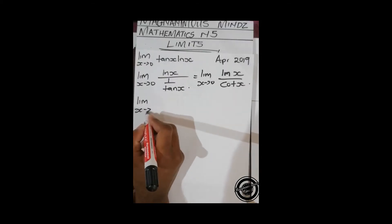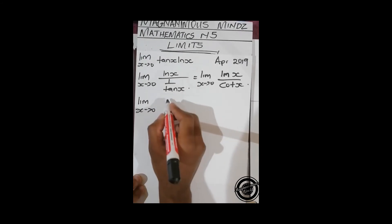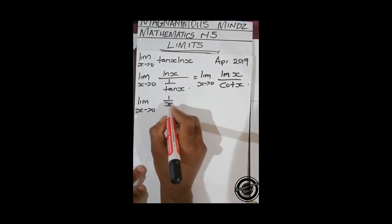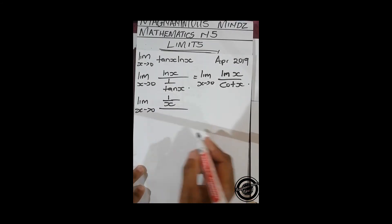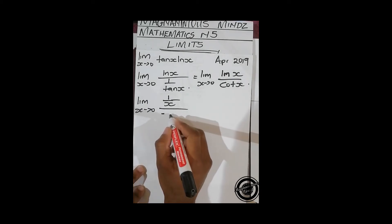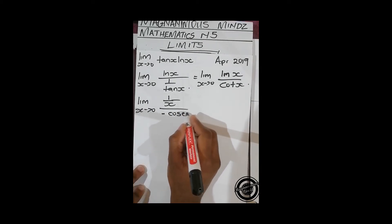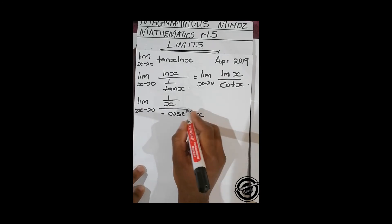So we use L'Hôpital's rule and differentiate. Ln x is 1 over x. We differentiate cot x, is going to give us negative csc squared x.